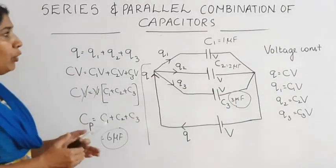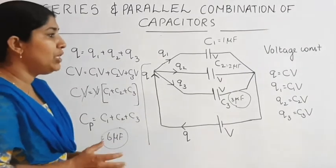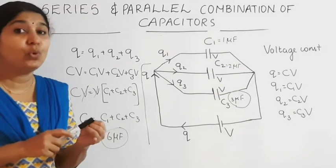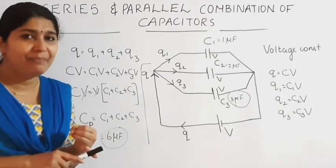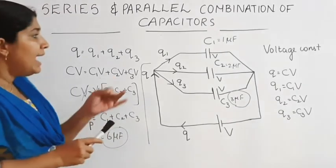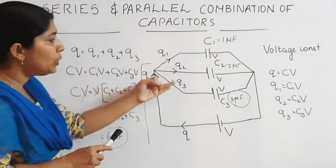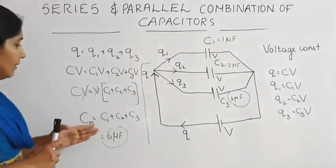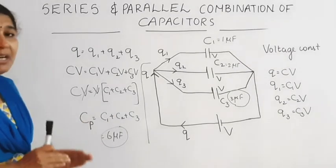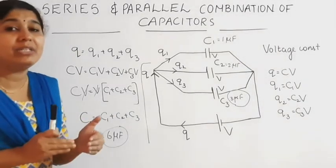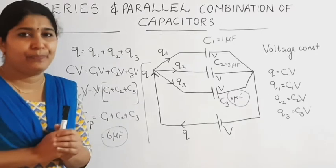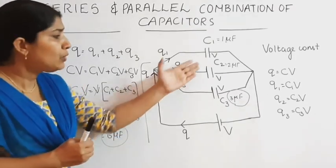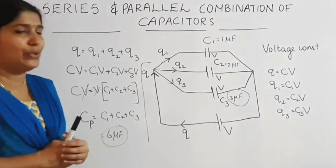The important points in parallel combination: first, voltage remains constant; second, charge is divided into three according to the capacitance of the capacitor; third, effective capacitance is larger than the greatest value of the capacitor in the circuit.